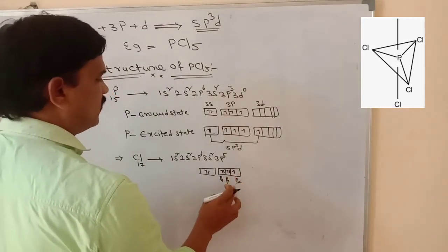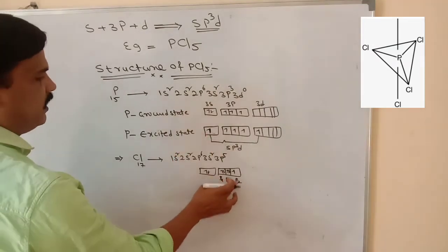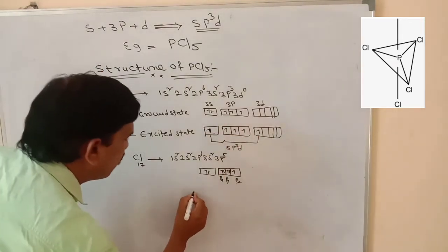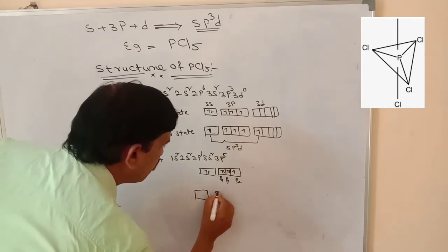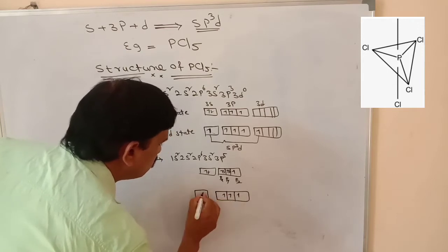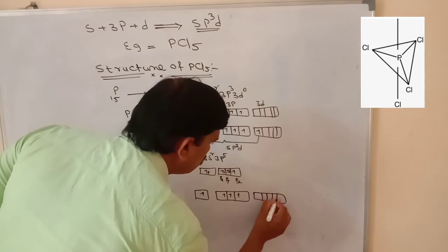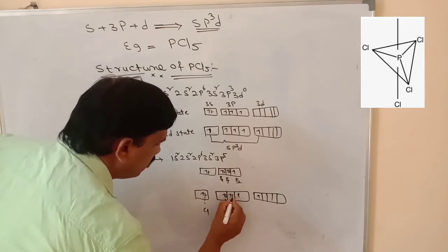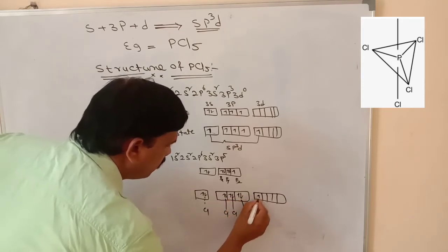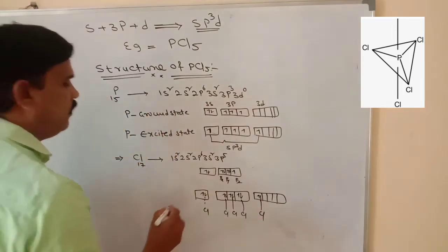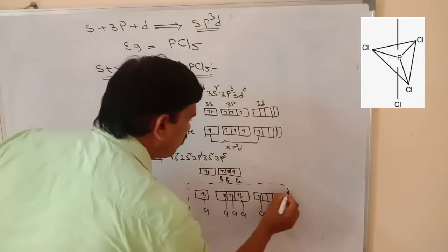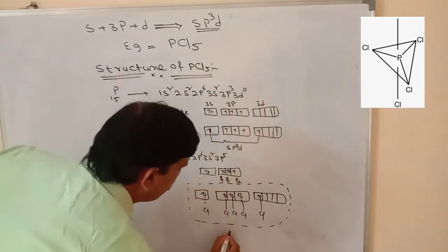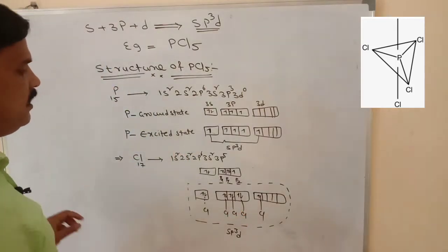The pz orbital electrons of chlorine participate in chemical bonding, overlapping with the phosphorus excited state's five unpaired electrons. Five chlorines overlap one by one with the phosphorus excited state sp3d orbital unpaired electrons, forming sp3d hybridization.